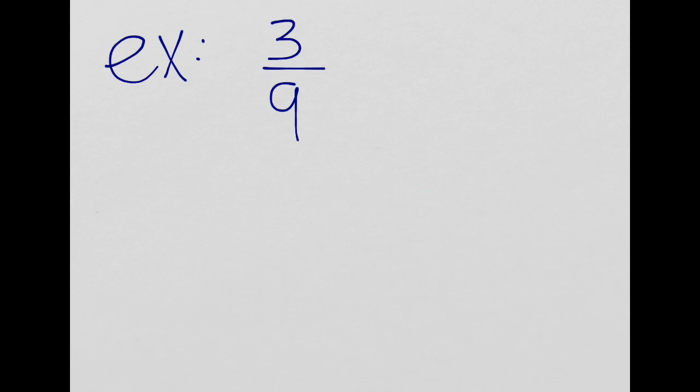Let's look at another example. Here I have 3 over 9. Well, I'm going to rewrite this as 3 over 3 times 3, because 9 is equal to 3 times 3.